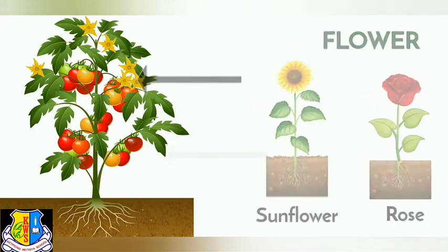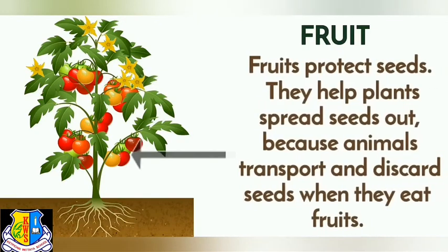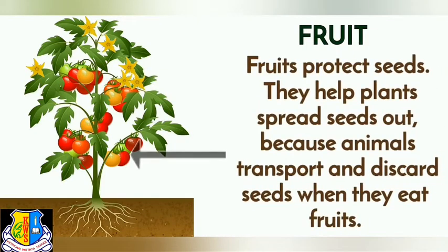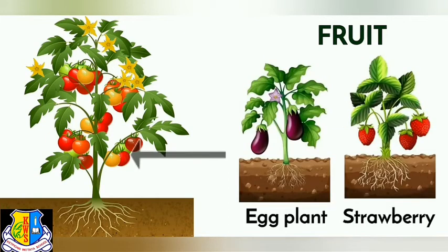Fruit. Fruits protect seeds. They help plants spread seeds out because animals transport and discard seeds when they eat fruits. Some examples of fruit we eat are eggplant and strawberry.